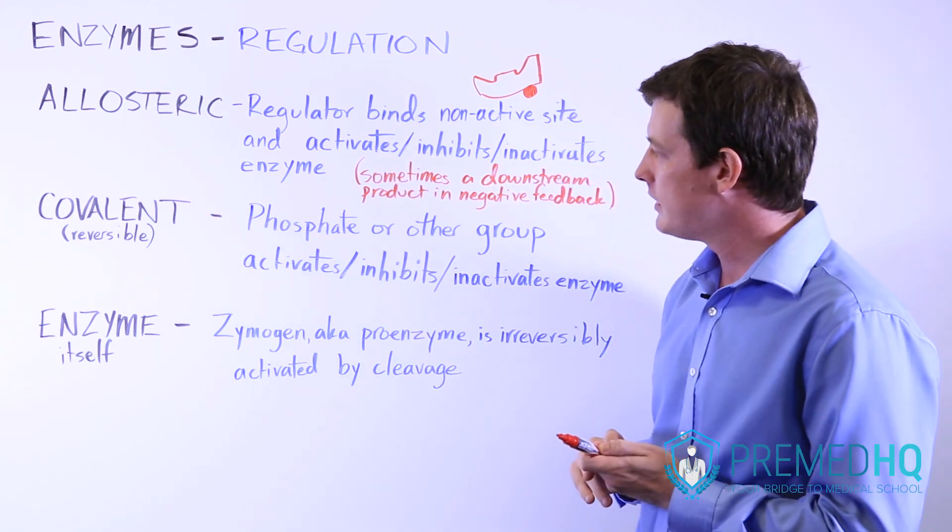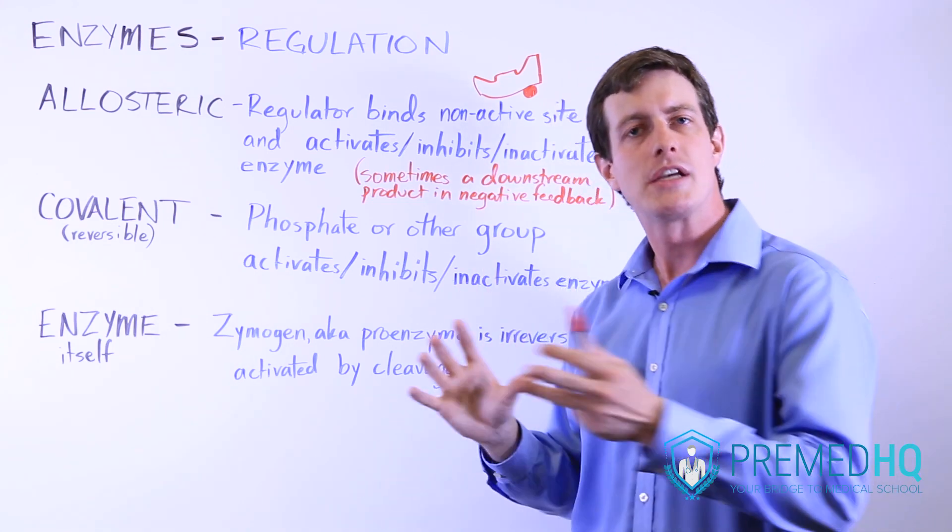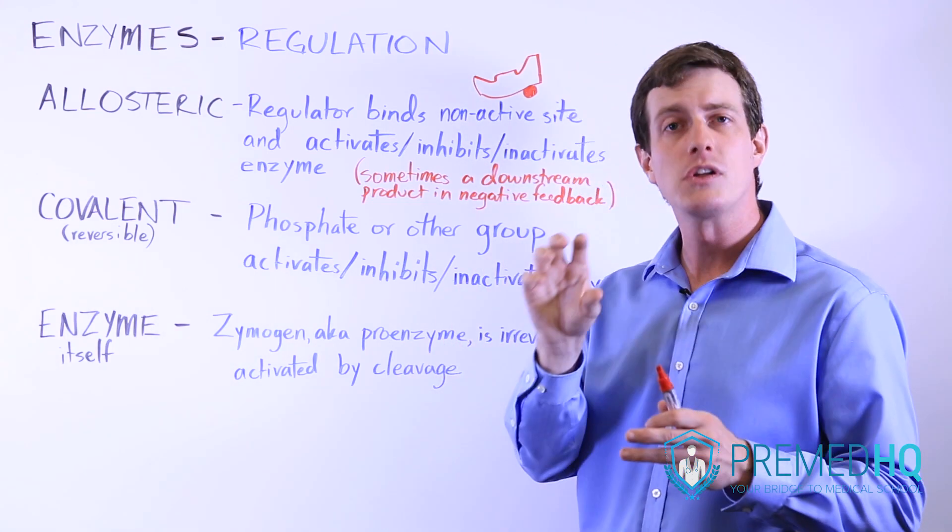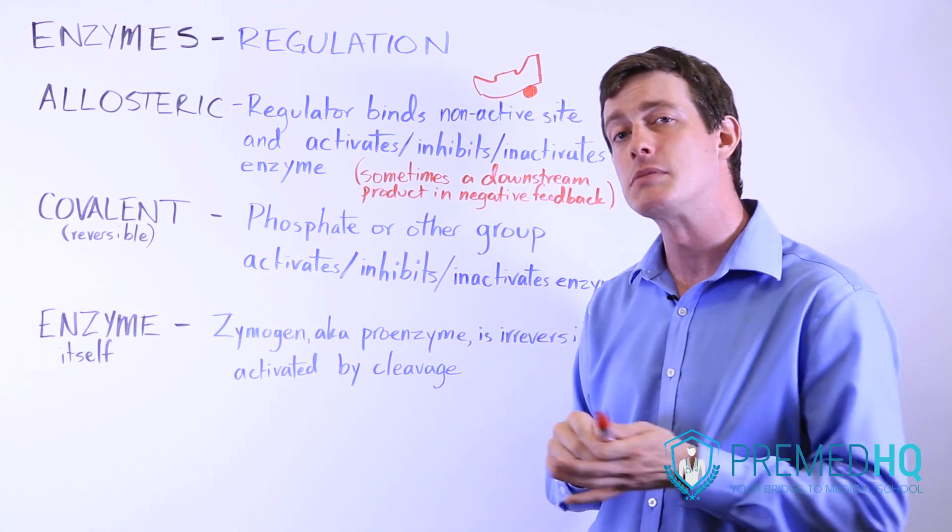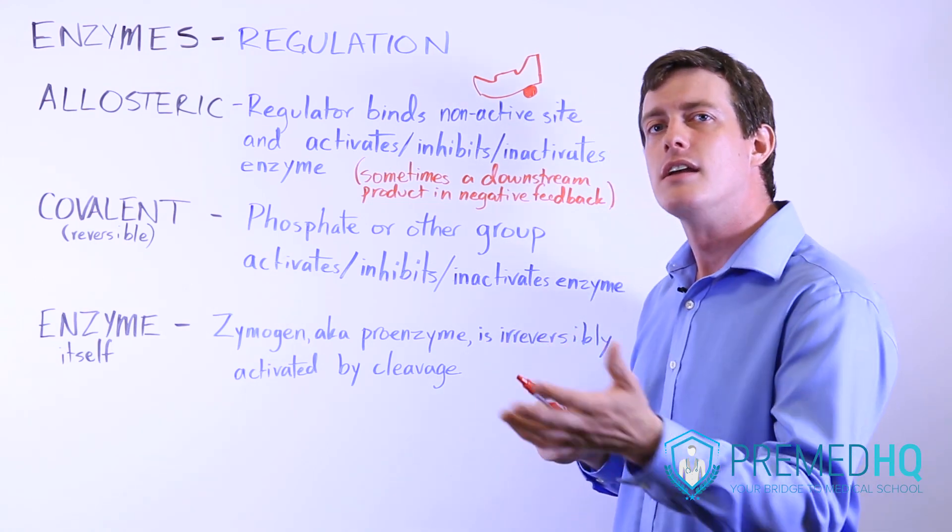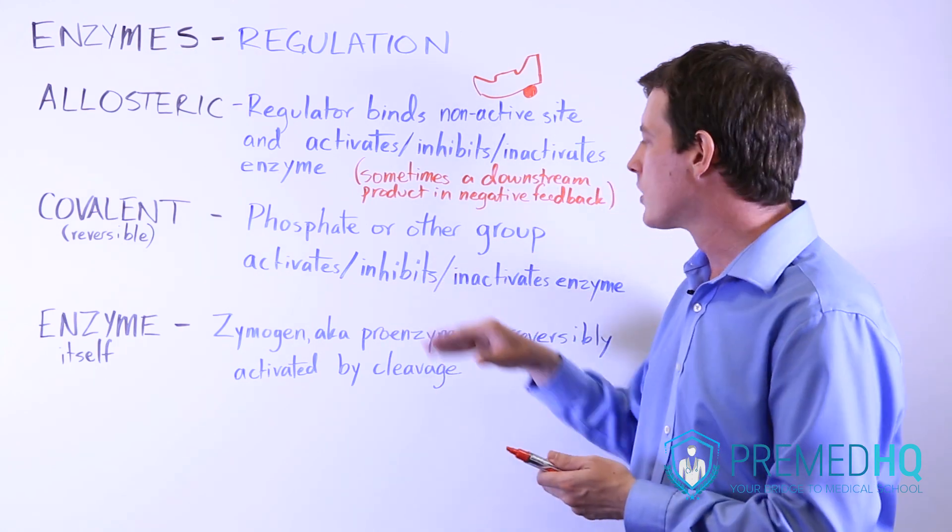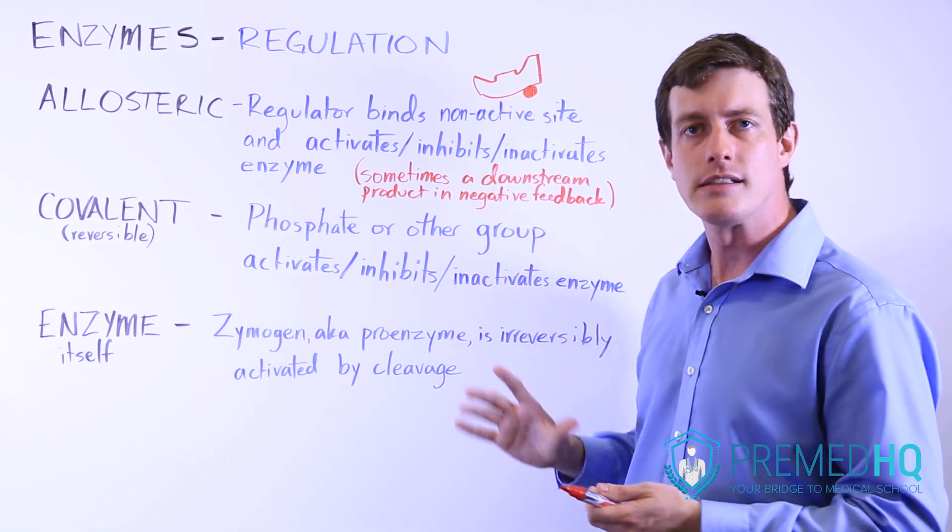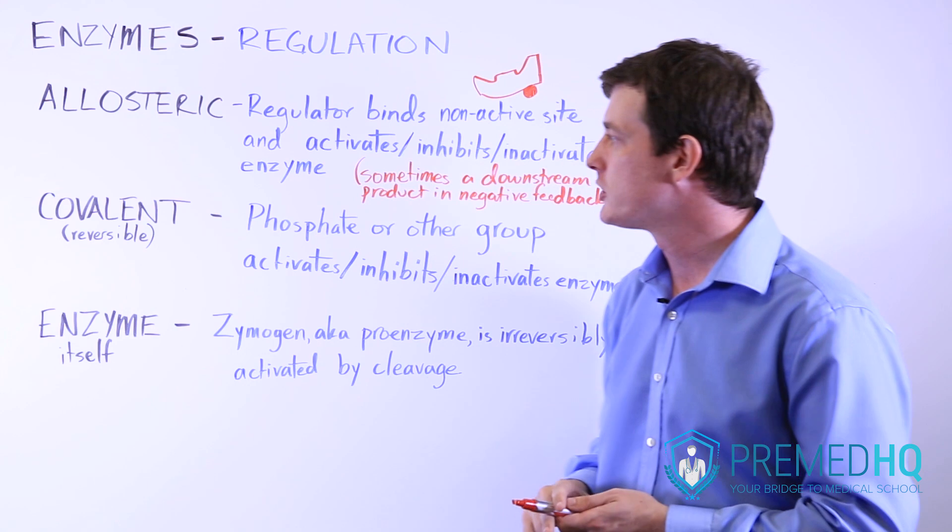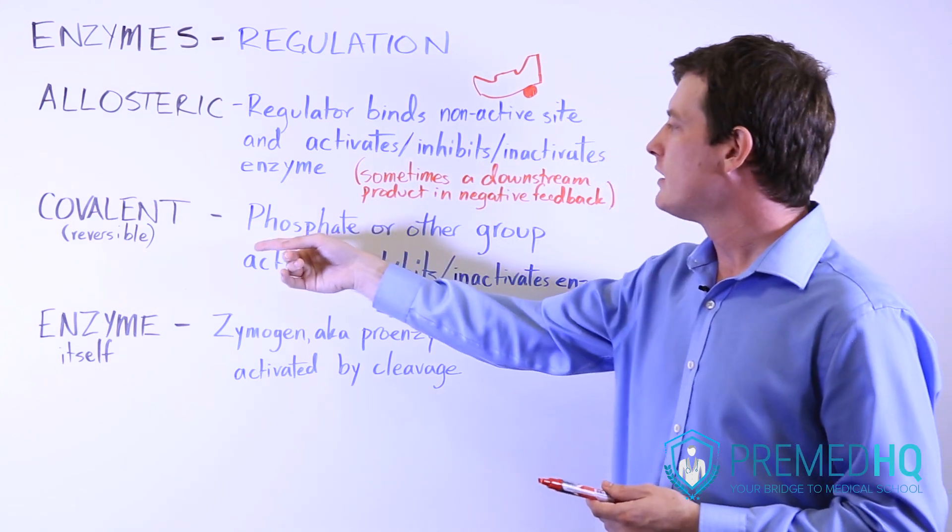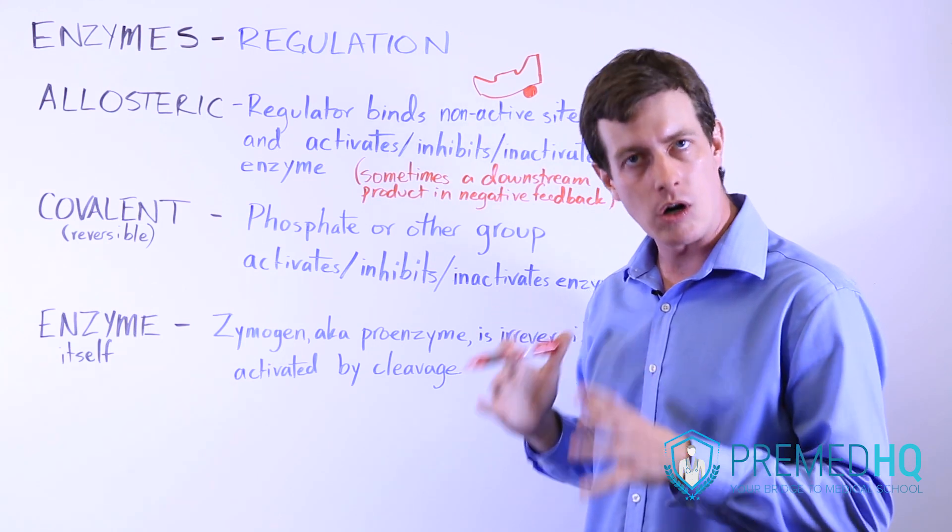A lot of enzymes, if they're phosphorylated, they might become active or they might become inactivated. Phosphorylation doesn't necessarily mean activation of that enzyme. Sometimes phosphorylation means that the enzyme is actually going to either be inhibited, so it will reduce its function, or completely inactivate that enzyme. But the key with this is that it's reversible covalent modification, and usually that involves a phosphate group, although other groups like methyl groups are possible.